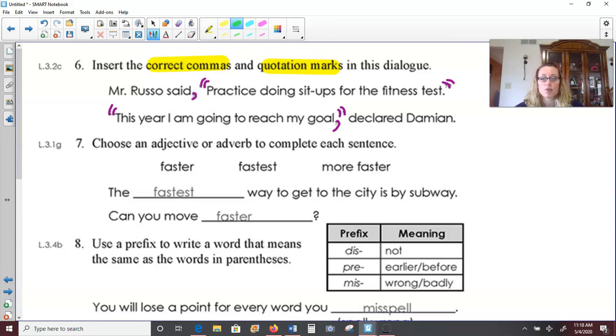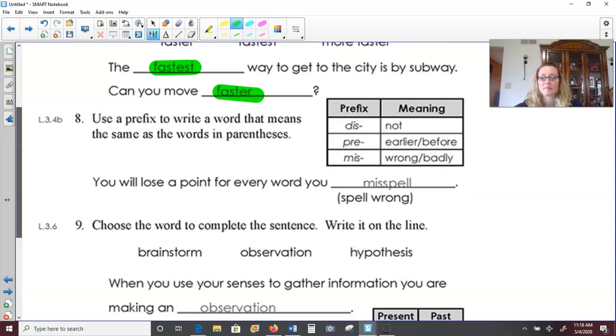On number seven, we need to choose an adjective or an adverb to complete each sentence. So whichever one fits better. Using faster, fastest, and more faster. The fastest way to get to the city is by subway. The fastest way to get to the city. Because you're comparing this way to all the other ways. So it is the fastest. And then you might say to someone, can you move faster? Not can you move more faster.